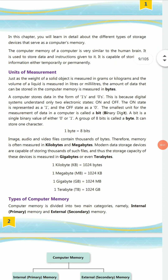Just as the weight of a solid object is measured in kilograms, and liquids are measured in liters and milliliters, the amount of data that can be stored in a computer memory is measured in bytes. The computer stores data in the form of ones and zeros.